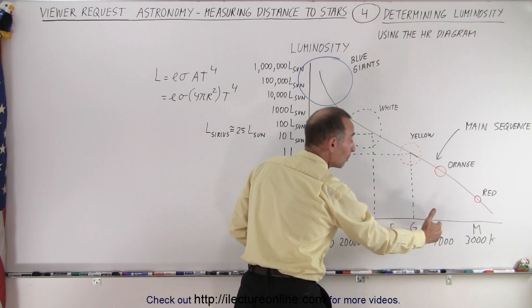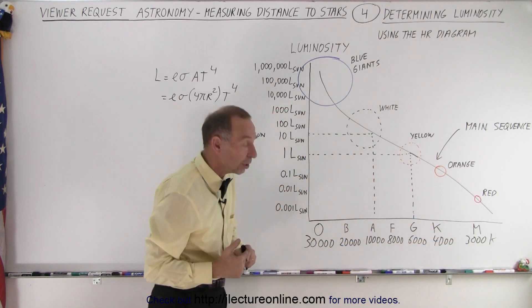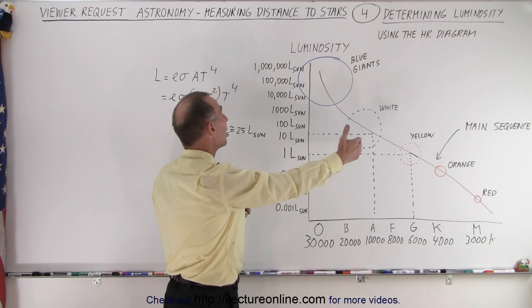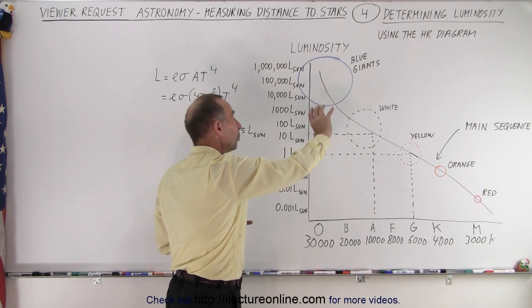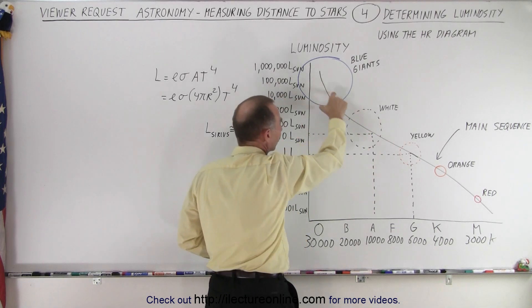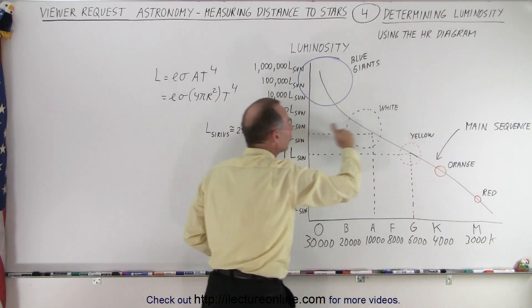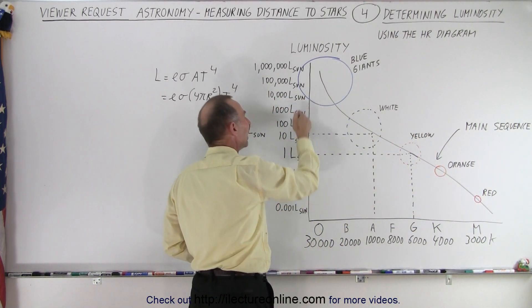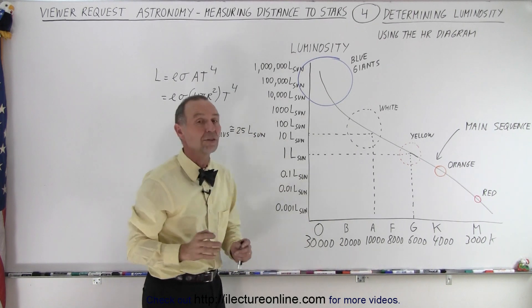And all we do is read off the spectral type from the B minus V color index. Then we come up, we hit the main sequence, we do a small adjustment because obviously it's not exactly on the line but it's kind of a distribution on the line to see what kind of star we're dealing with. And then we read off the luminosity of the star.